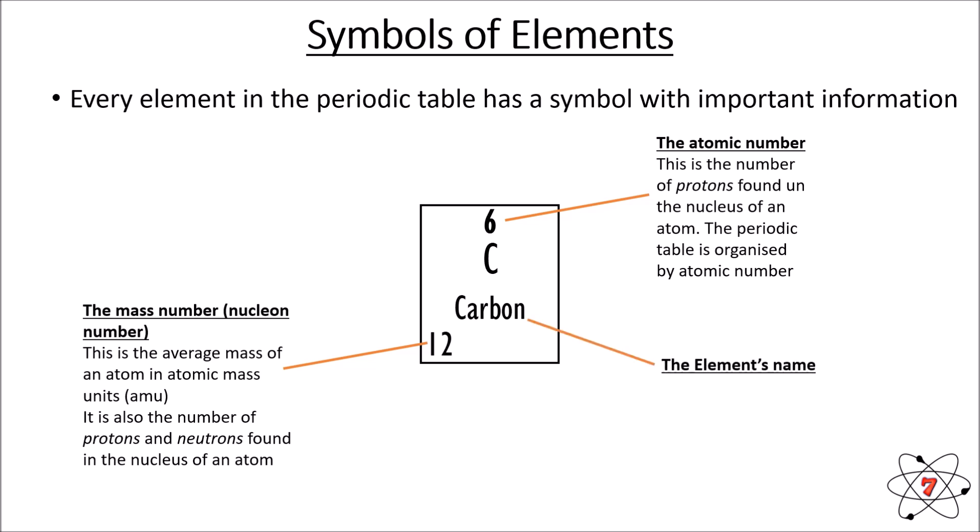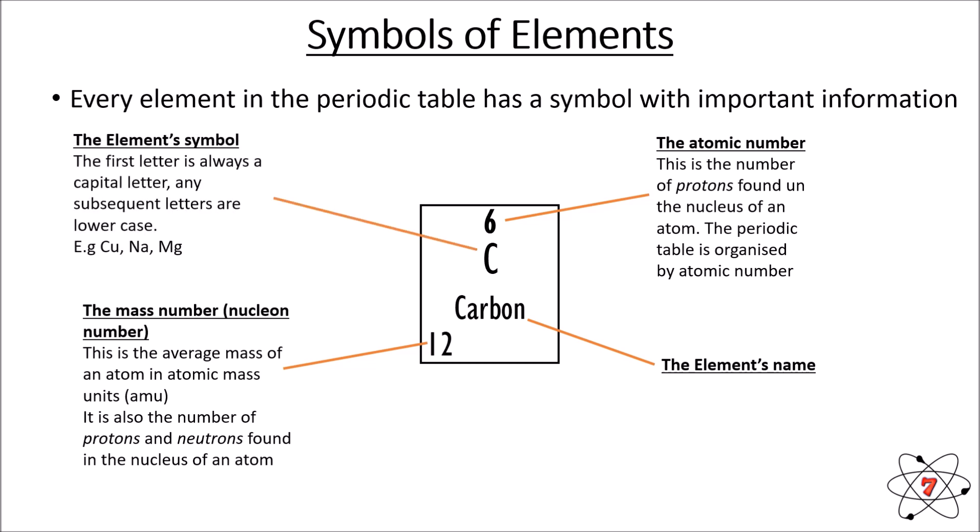We also have the element name and the element symbol. The first letter of any symbol is always a capital letter — for example, carbon is capital C. If an element has more than one letter in its symbol, the subsequent letters are always lowercase — copper is capital C, lowercase u; sodium is capital N, lowercase a. Some symbols don't match the names you might expect, so don't assume all symbols match their words. Magnesium, for instance, is capital M, lowercase g.